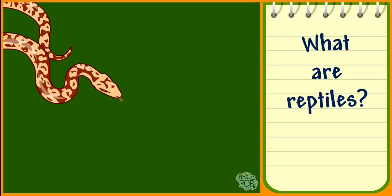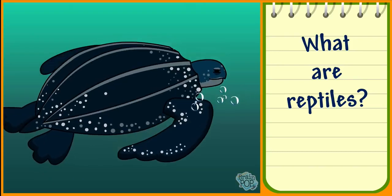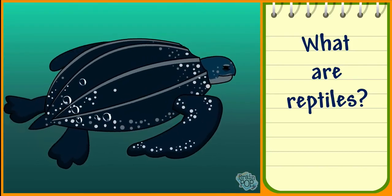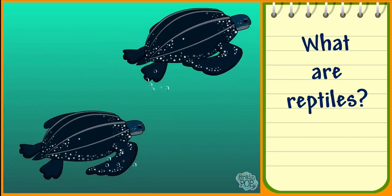Snakes, lizards, crocodiles, and tortoises are all reptiles. Even though sea turtles live in the ocean, they're reptiles too. They've adapted to live in their ocean environment.